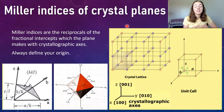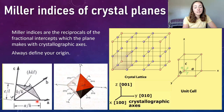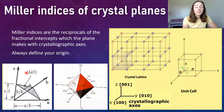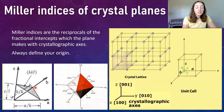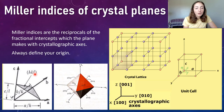Miller indices are the reciprocals of the fractional intercepts which the plane makes with crystallographic axes. Looking at the bottom left, we have a plane shown on A, B, and C axes. The plane intercepts each axis at a certain point we can numerically define based on the known lengths of A, B, and C. Taking the reciprocal of that numerical intercept value and placing those reciprocal numbers into the H-K-L format — A intercept reciprocal, B intercept reciprocal, C intercept reciprocal — gives us the Miller index. That's how we arrive at notations like 010, 110, or 111.